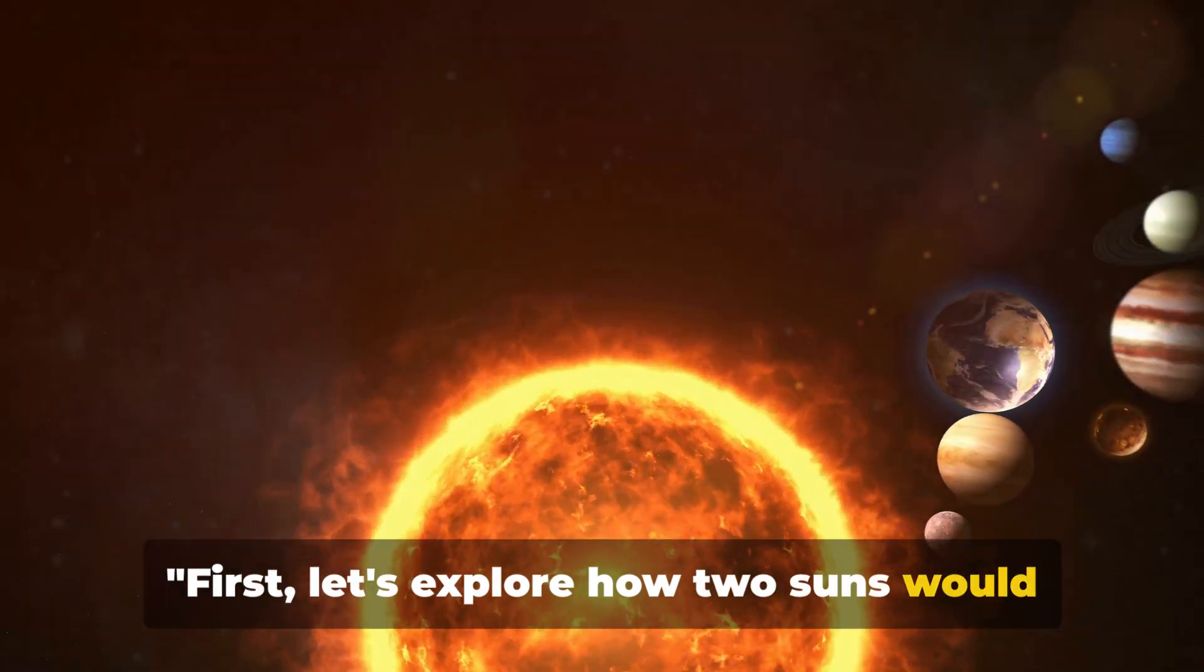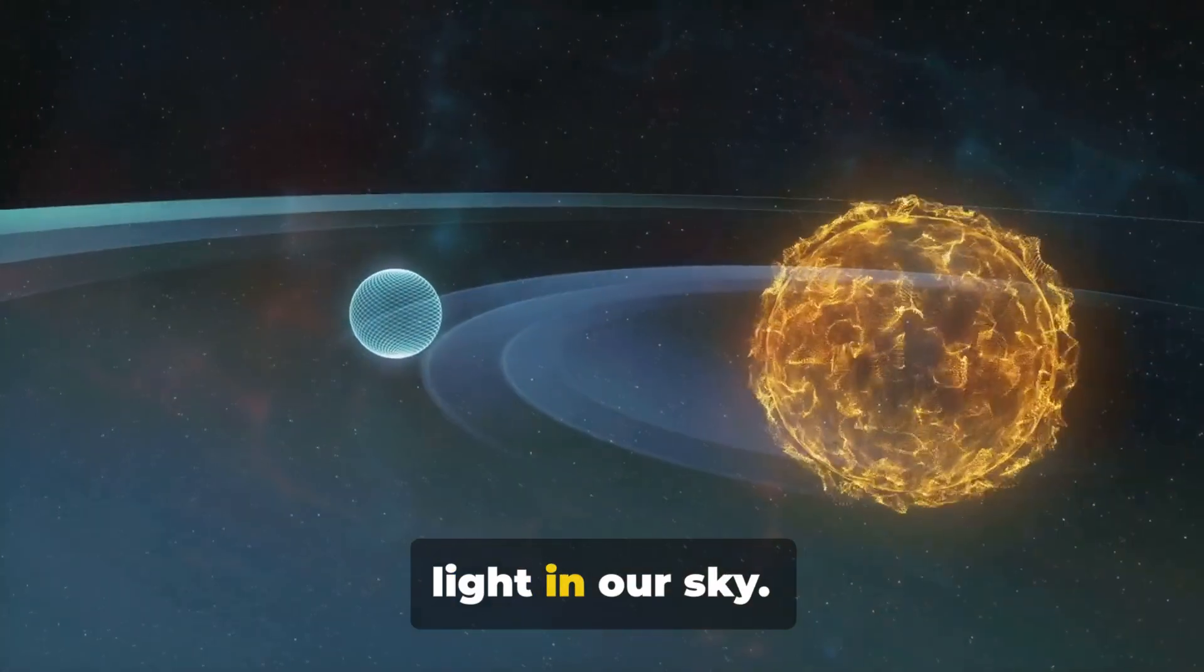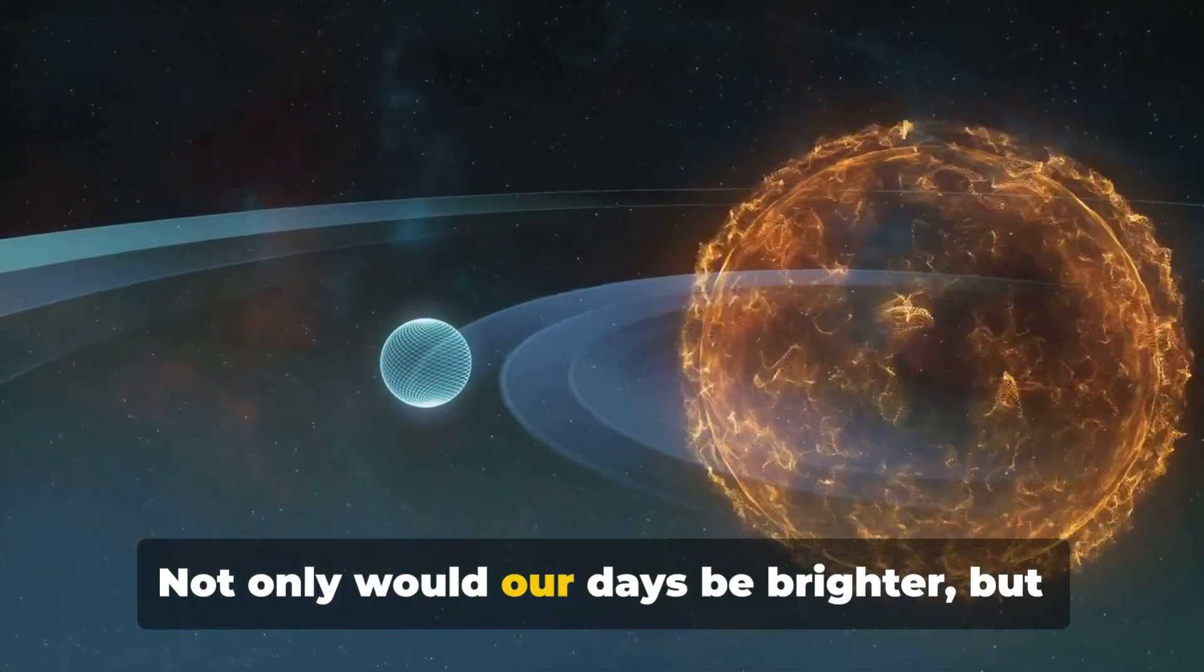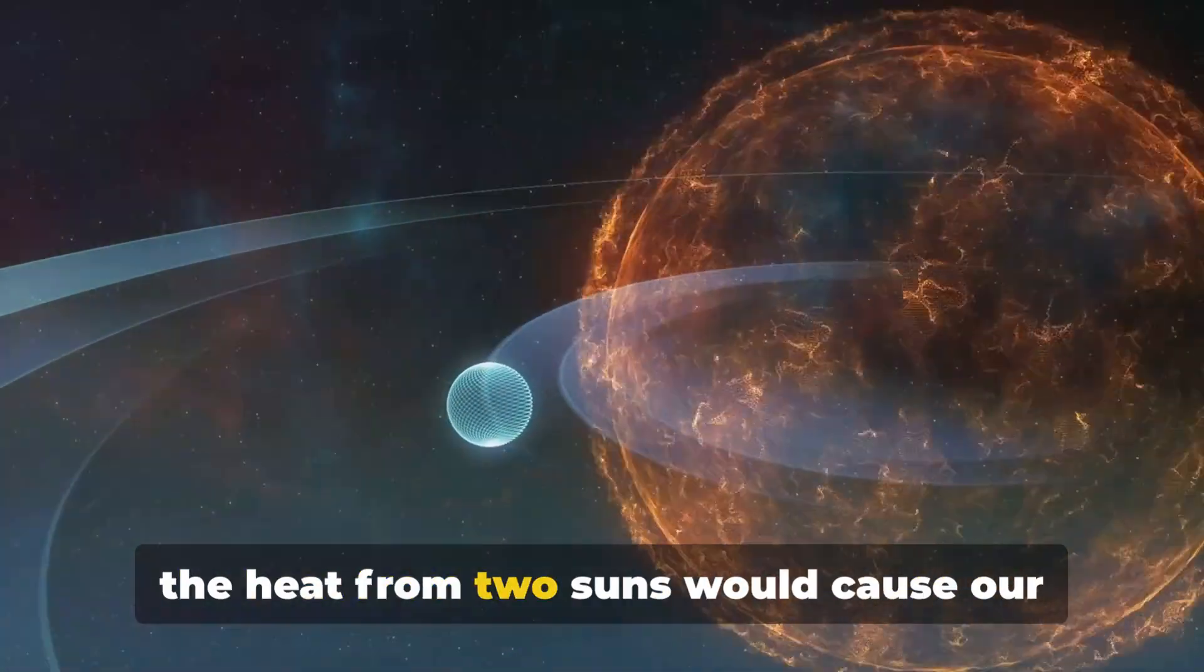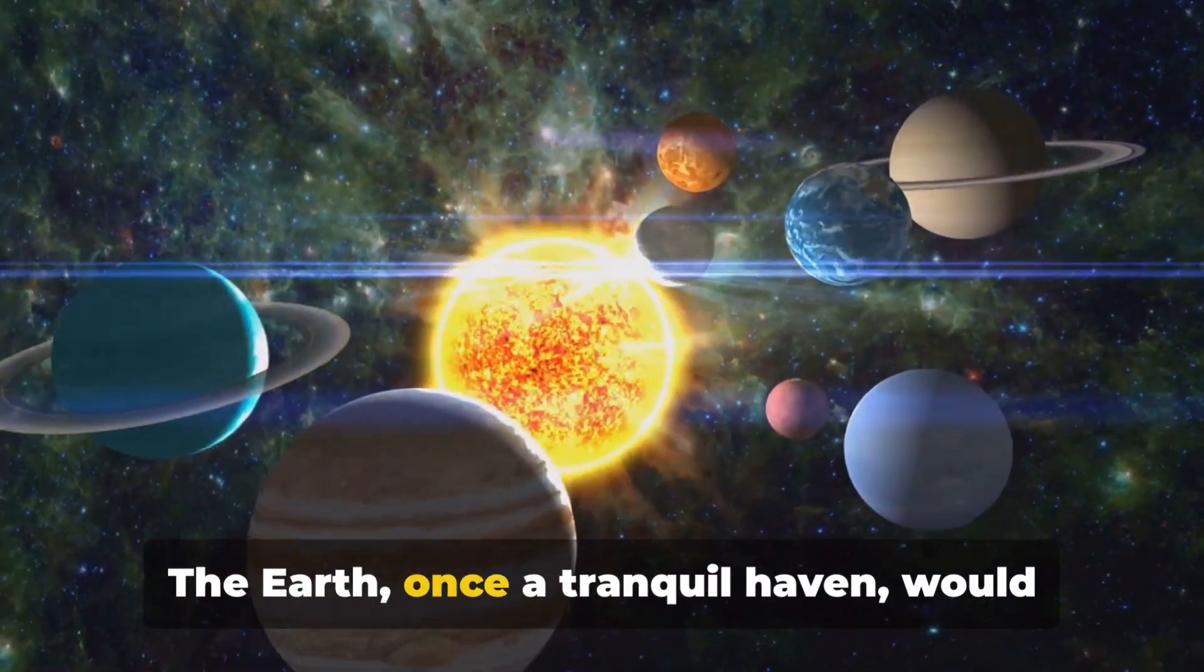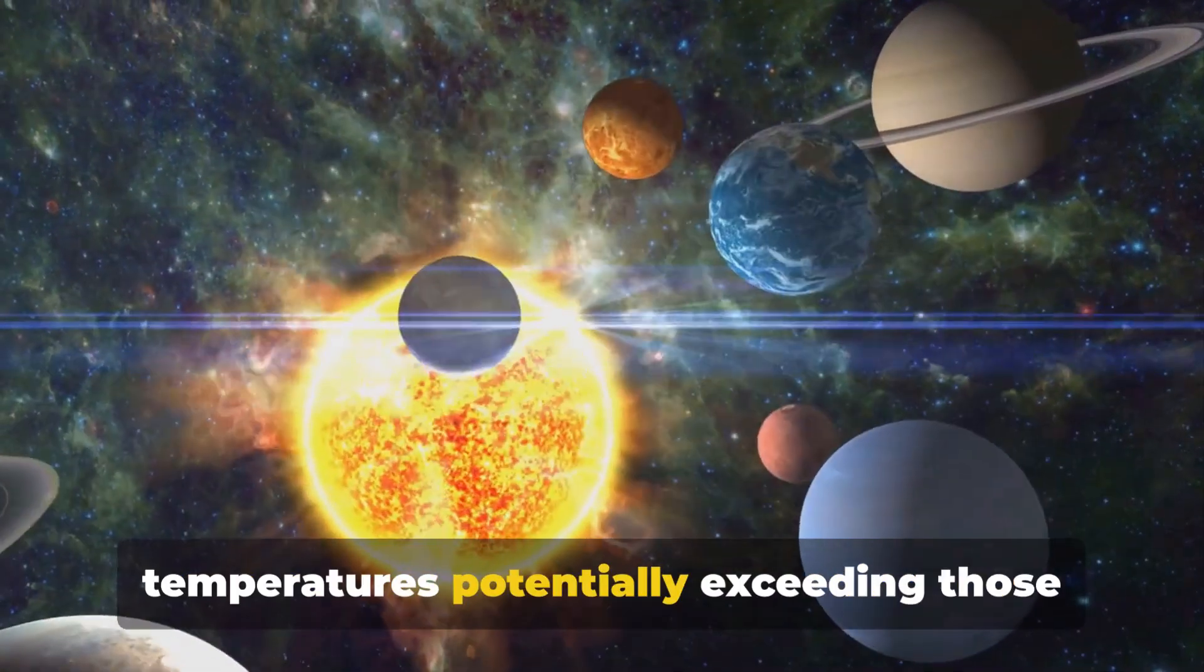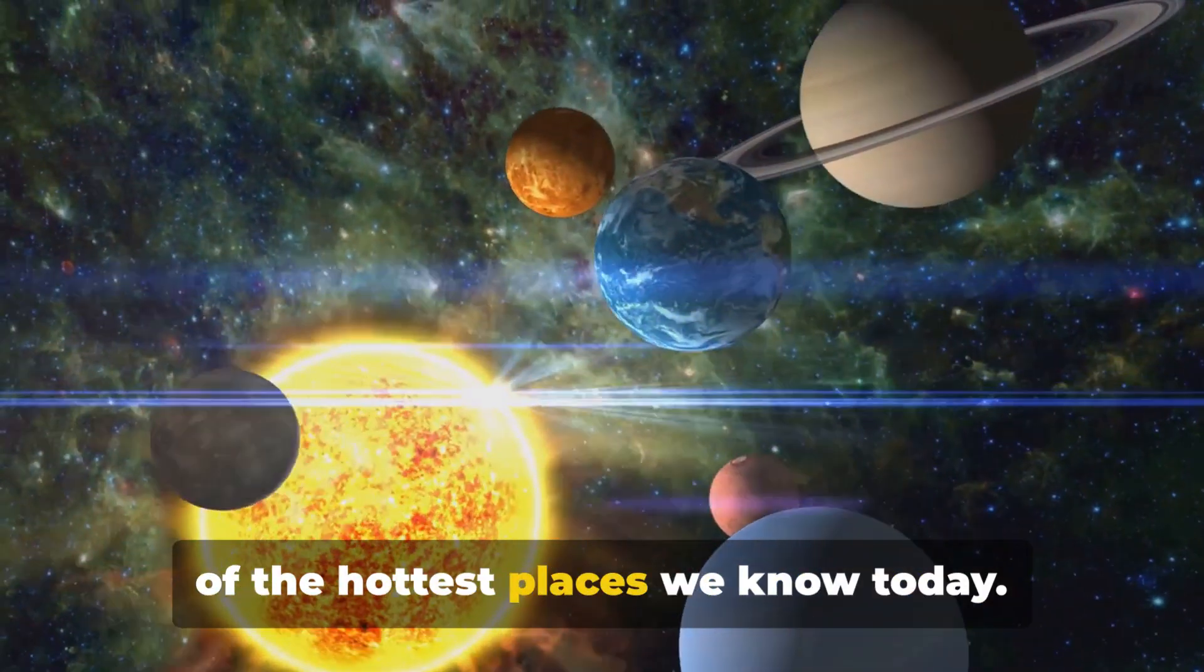First, let's explore how two suns would affect our climate. Imagine for a moment, two blazing orbs of light in our sky. Not only would our days be brighter, but the heat from two suns would cause our planet's temperature to surge. The Earth, once a tranquil haven, would transform into a sweltering furnace, with temperatures potentially exceeding those of the hottest places we know today.